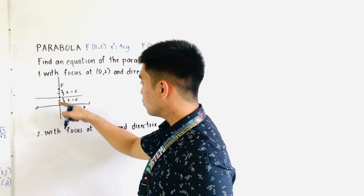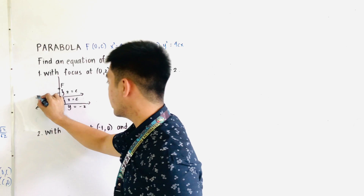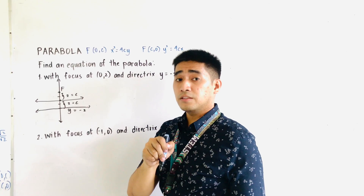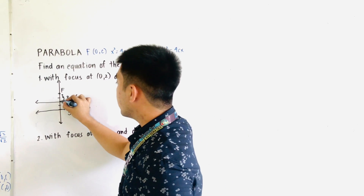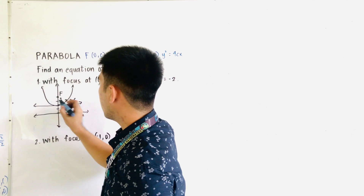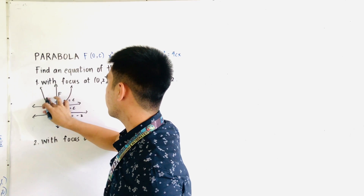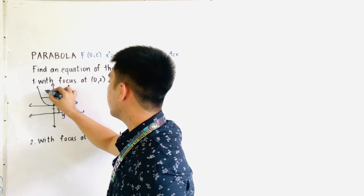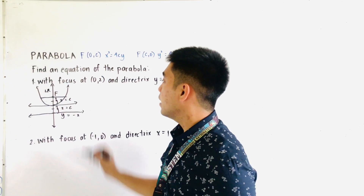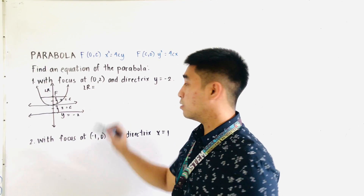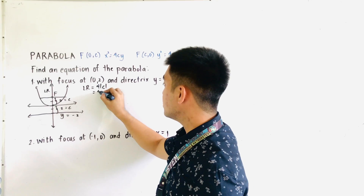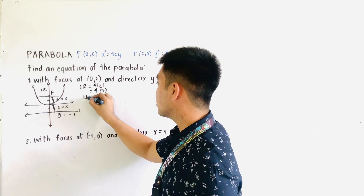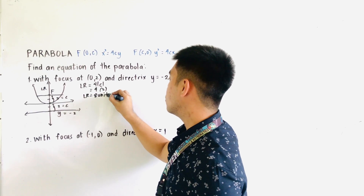Since the focus is located above the vertex at the origin, our parabola is opening upward. This is the latus rectum — the chord through the focus parallel to the directrix. The length of the latus rectum is always equal to 4c. That is 4 times 2, so the latus rectum is equal to 8 units.